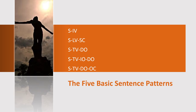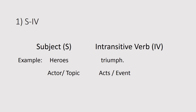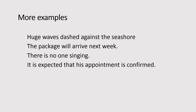Let's have the first one: Subject Intransitive Verb. Like in our example, 'The hero travels.' The intransitive verb doesn't require an object — you just have the doer and the action. 'Heroes triumph' — that's it. More examples: 'Huge waves dashed against the seashore.' 'Dashed' doesn't require an object — 'against the seashore' is a prepositional phrase functioning as adverbial modifier. 'The package will arrive next week' — 'will arrive' is intransitive, 'next week' is an adverbial modifier indicating time.